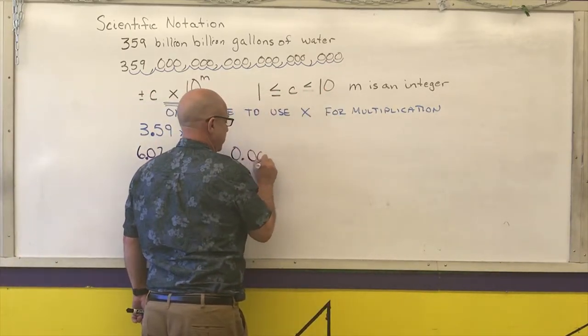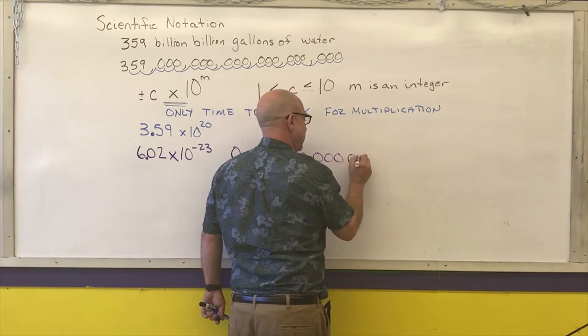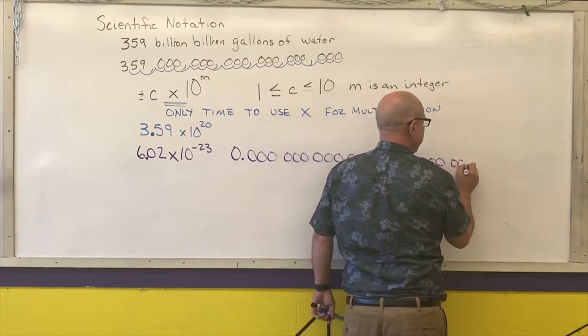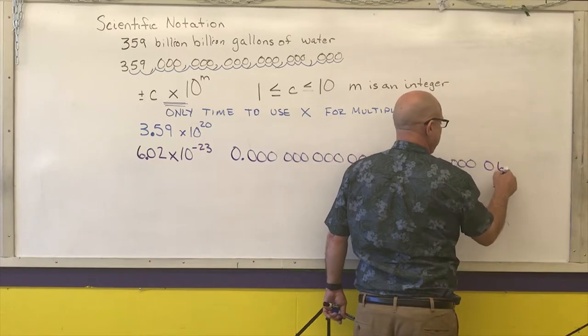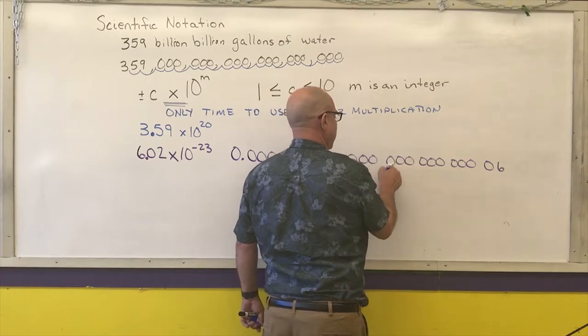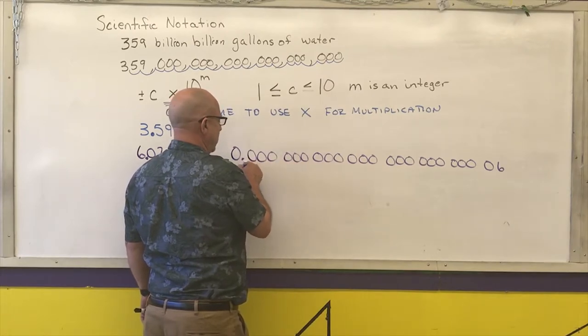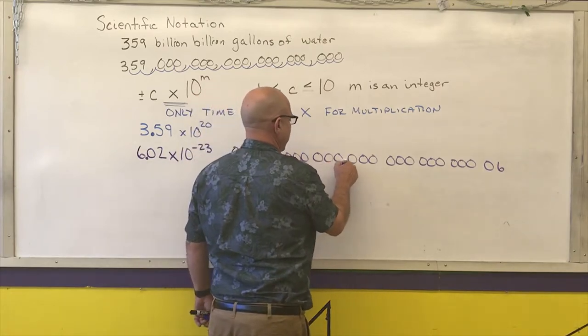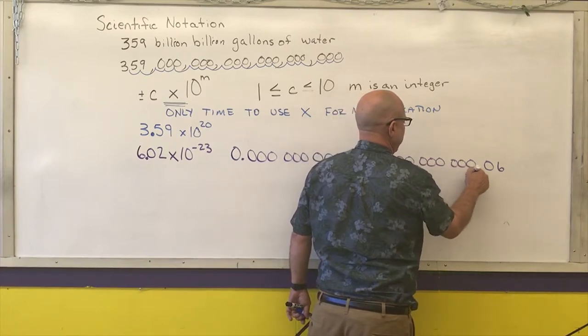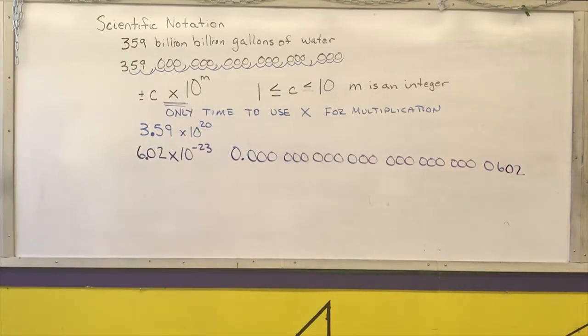I'm going to have 1, 2, 3, 4, 5, 6, 7, 8, 9, 10, 11, 12, 13, 14, 15, 16, 17, 18, 19, 20, 21, 22. Let me check. 1, 2, 3, 4, 5, 6, 7, 8, 9, 10, 11, 12, 13, 14, 15, 16, 17, 18, 19, 20, 21, 22, 23. So that is the number written down as a decimal.